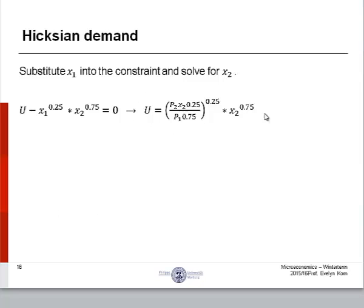So remember our constraint, right? So we set it right back into the constraint. That's what you want to do. It's a very similar method to what we did previously, except that instead of an income constraint, we have a utility constraint. Anyway, we plug it back in.